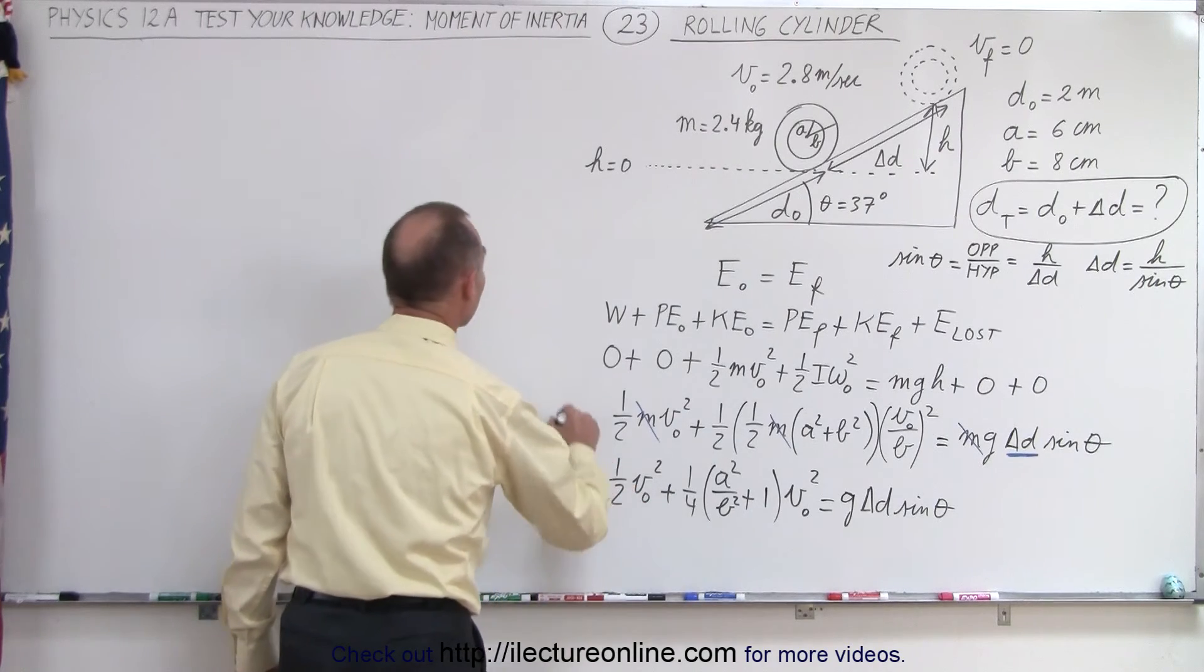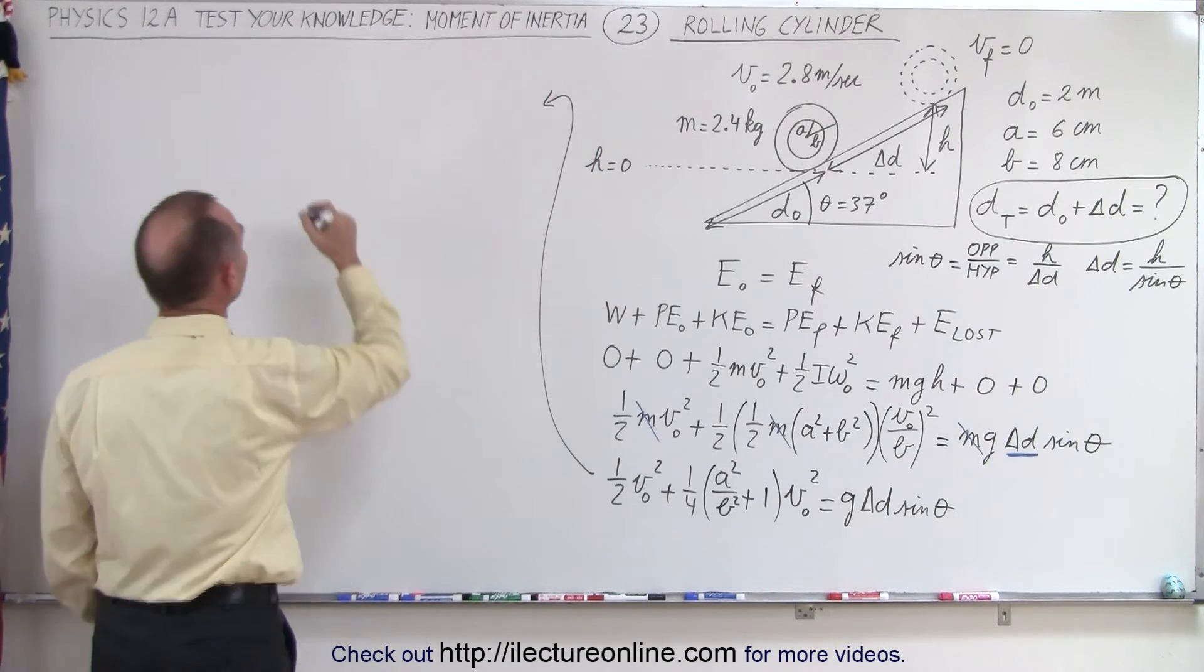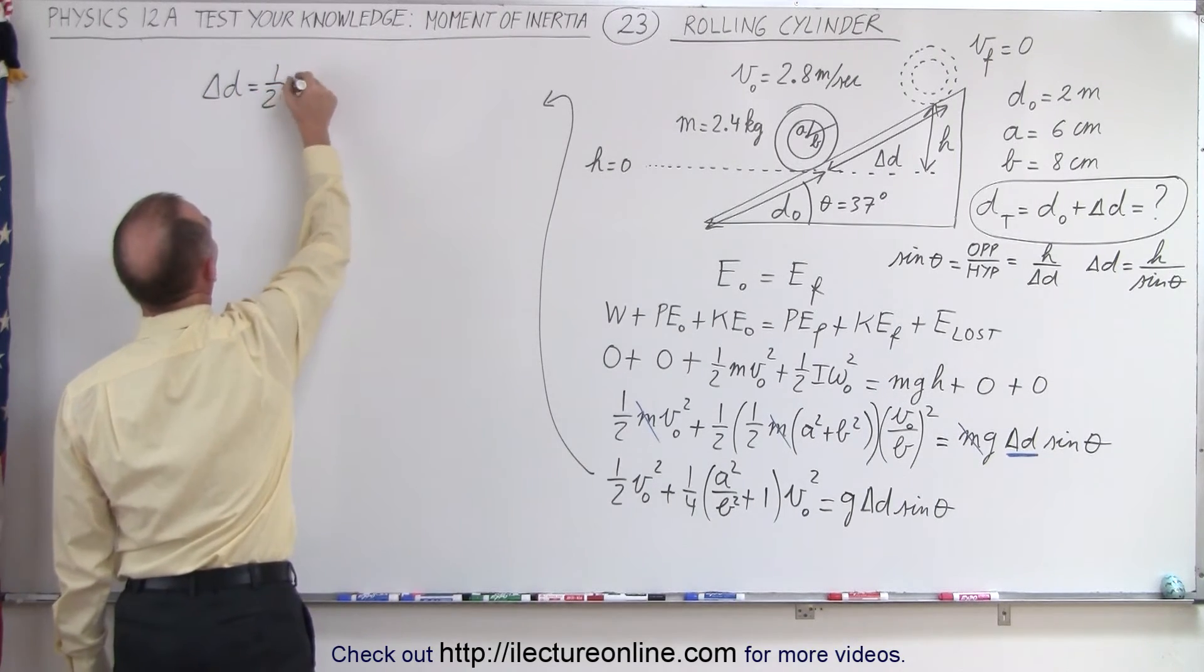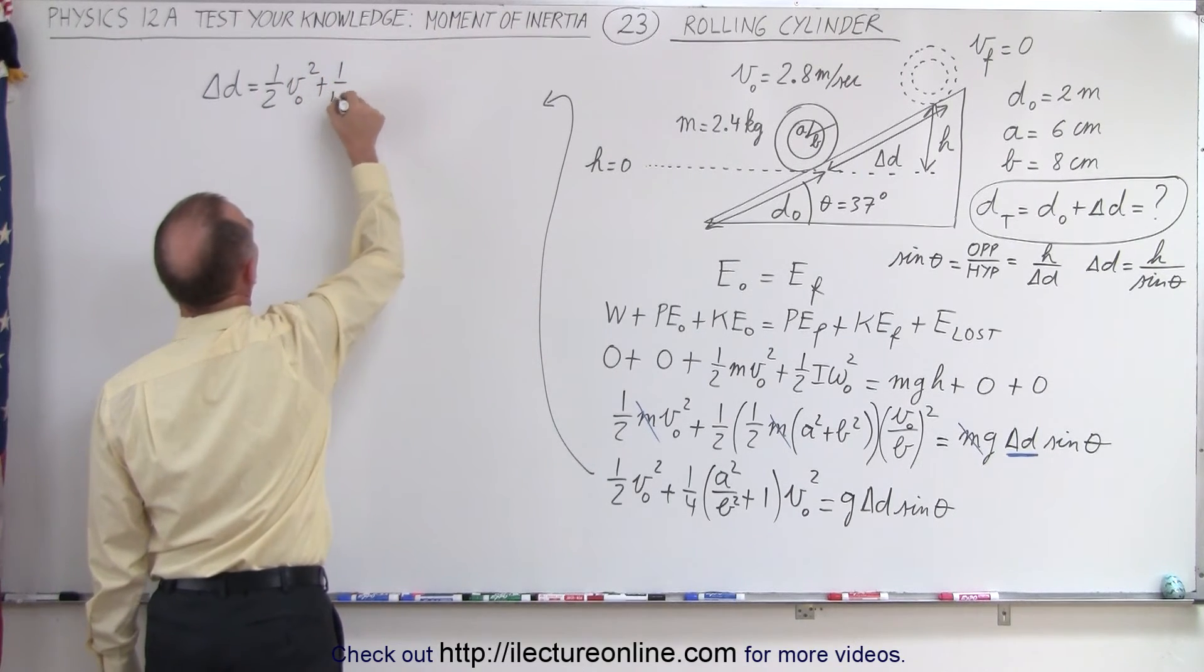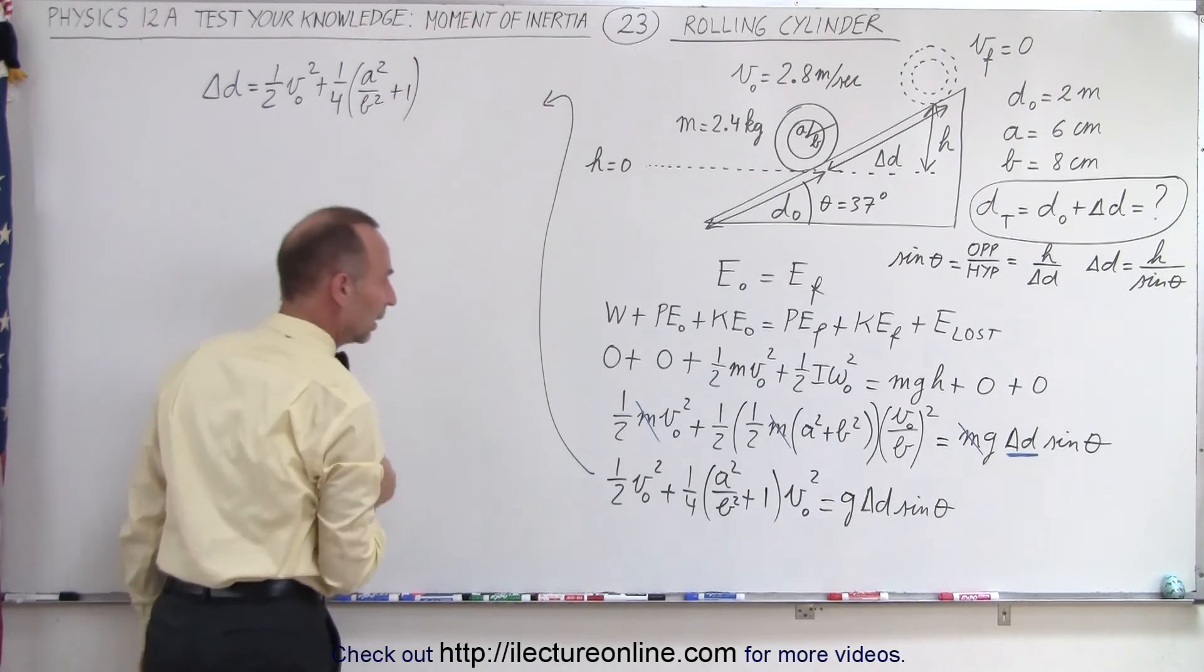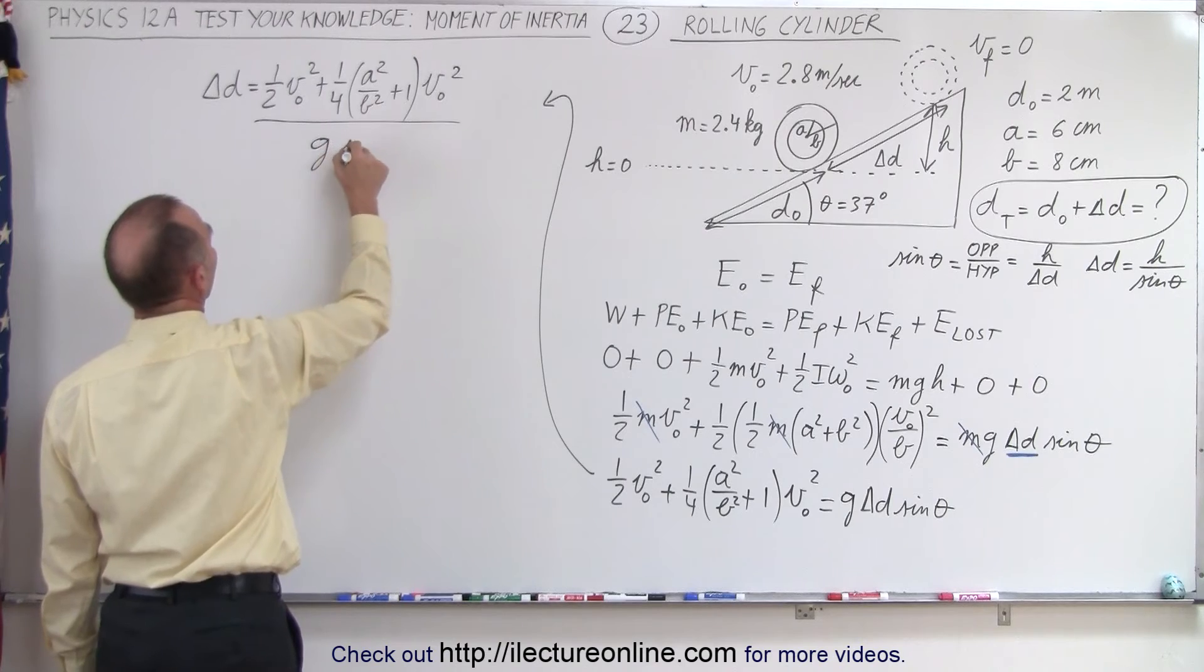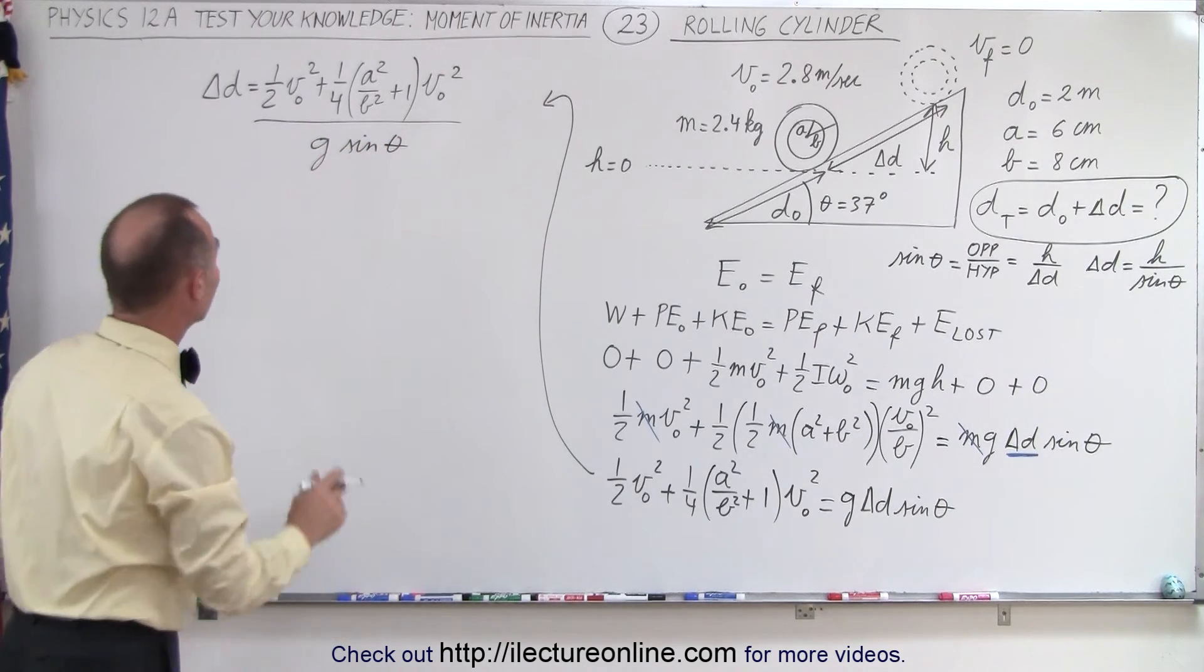So in that case, we can then come up here and finish it. So we have delta d is going to be equal to one-half v-initial-squared plus one-quarter quantity a-square plus b-square plus one times v-initial-squared, all divided by g times the sine of theta. Now we can go ahead and plug the numbers to see what we get.